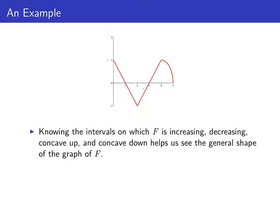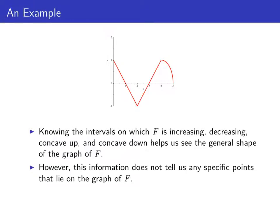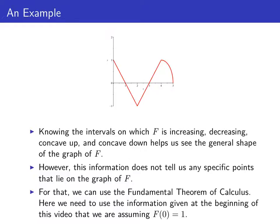Knowing where the graph of big F is increasing and decreasing, concave up and concave down, helps us see the general shape of the graph of this antiderivative. However, it doesn't help us find any specific points that lie on the graph. For that, we use the fundamental theorem of calculus. And this is where that original assumption — that big F passes through the point (0, 1) — will come into play.